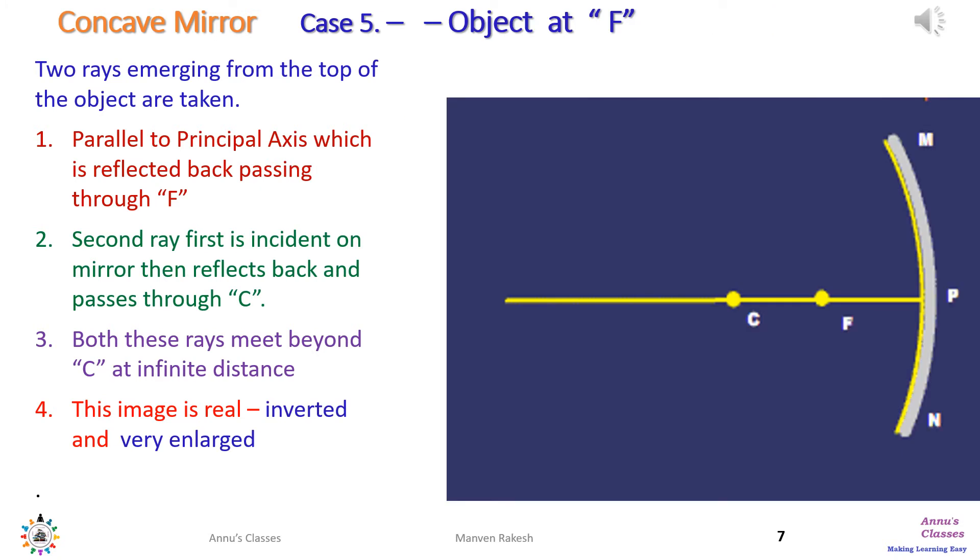In the fifth case, the object is at F. First ray passes parallel to the principal axis and after reflection passes through F. The second ray tends to pass through C - first it meets the mirror, then strikes back and passes through C. Both these rays meet at infinite distance to form a real, inverted and very enlarged image.